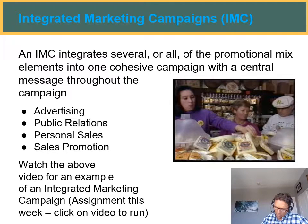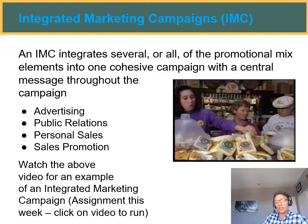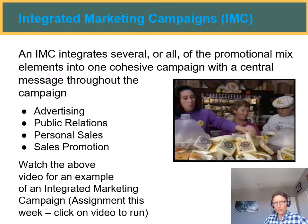Back to personal sales: there's the business-to-business side with territories and accounts, like the Cintas example. There are also some consumer products that have salespeople — they tend to be products with risk, oftentimes because they're expensive like a house or a car, or they have psychological risk like an engagement ring, which is both expensive and carries a lot of risk: do I get the right one, is she going to like it, is she going to say yes? So when there's a lot of risk, consumer products tend to have personal salespeople.